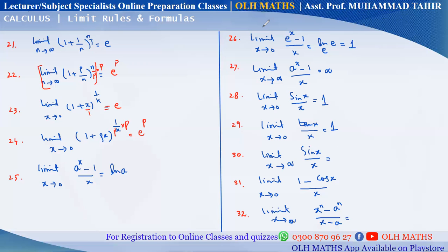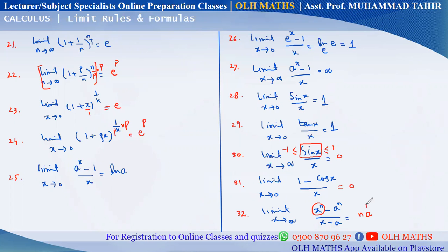When x approaches infinity, sin x / x — the answer is not 1. Because sin x is a bounded function; its value is always between −1 and +1. So sin x never goes to infinity — it stays between −1 and 1. But x approaches infinity — the angle becomes very very large, unbounded.